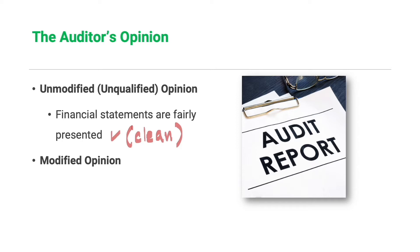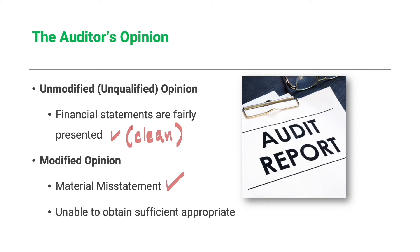If the auditor does not believe that the financial statements are fairly presented, or if the auditor is unable to obtain sufficient and appropriate audit evidence, then the auditor cannot issue an unmodified opinion. Instead, the auditor will issue a modified opinion if the financial statements as a whole are not free from material misstatement, or if the auditor is unable to obtain sufficient and appropriate audit evidence to conclude that the financial statements are free from material misstatements.